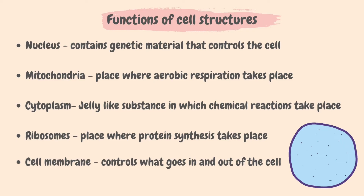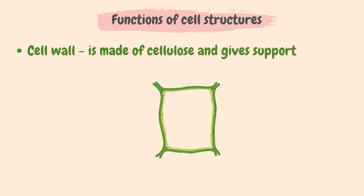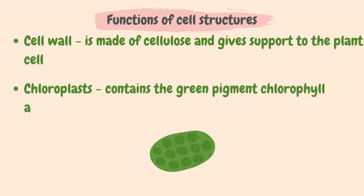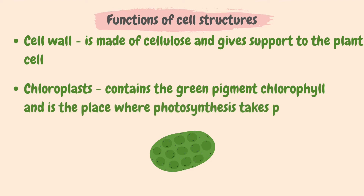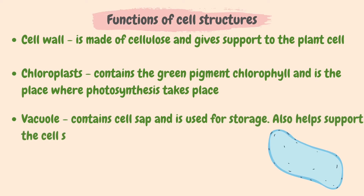Now let's take a look at the functions of plant cell structures. The cell wall is made of cellulose and gives structural strength and support to the plant cell — it also protects the cell. Chloroplasts contain the green pigment chlorophyll and are the place where photosynthesis takes place, capturing light energy from the sun and converting it into food for the plant. The vacuole contains cell sap, is used for storage, and also helps support the cell shape.